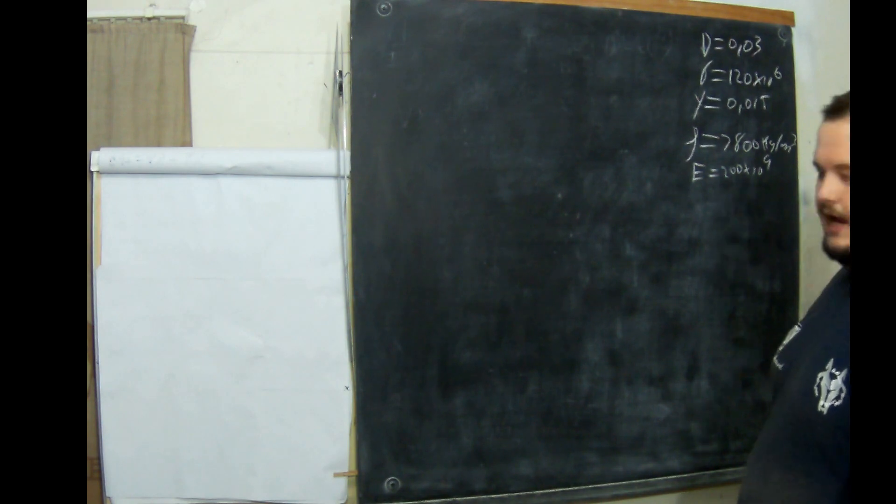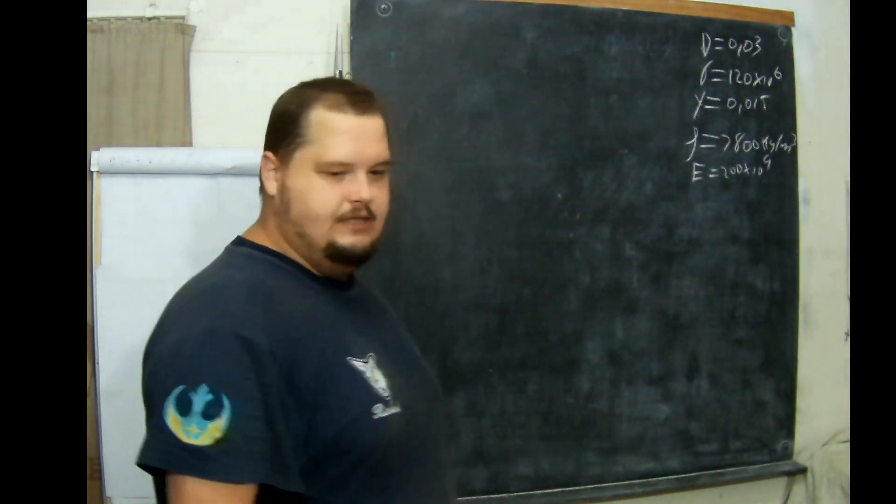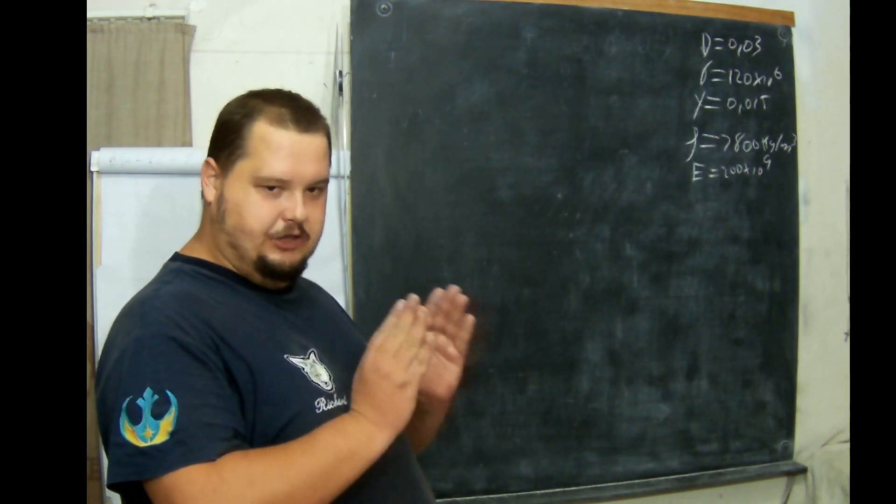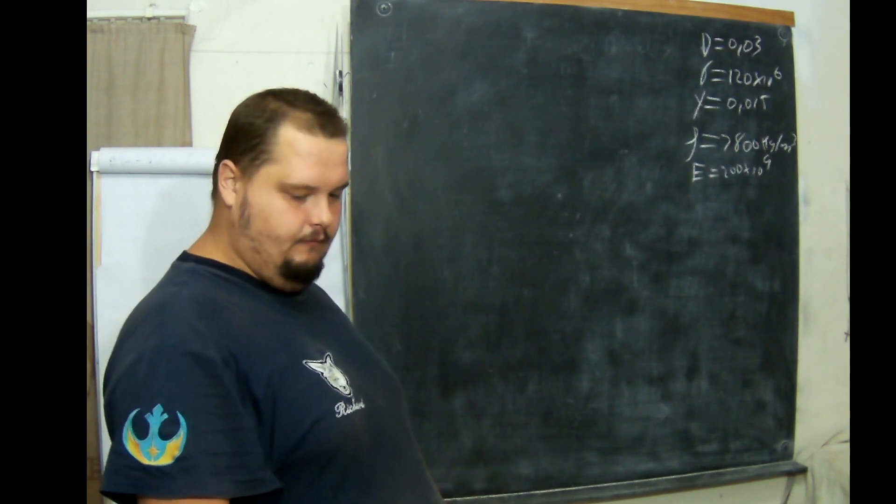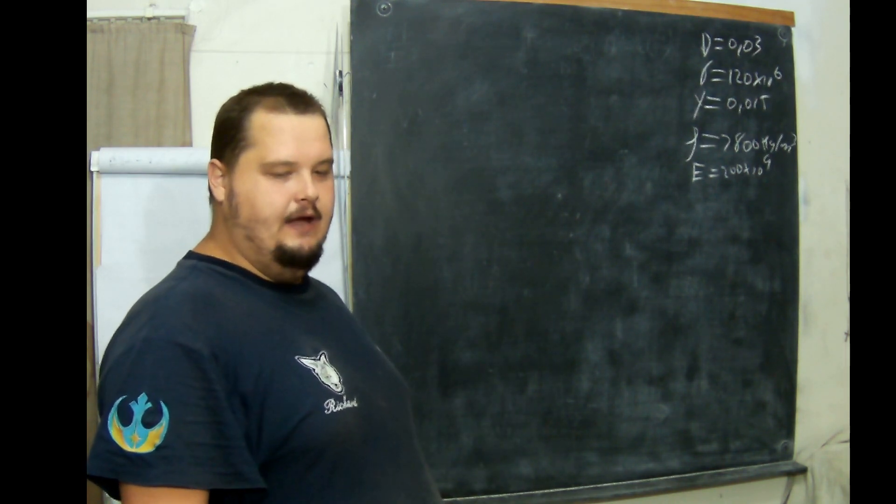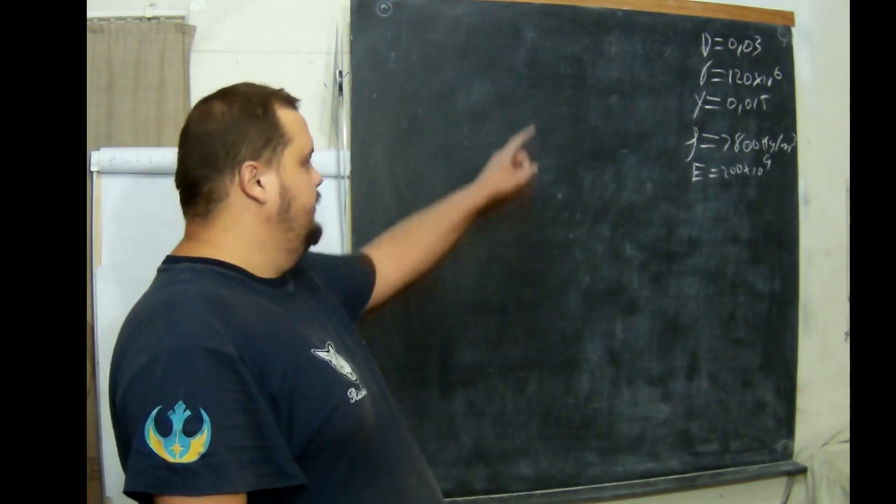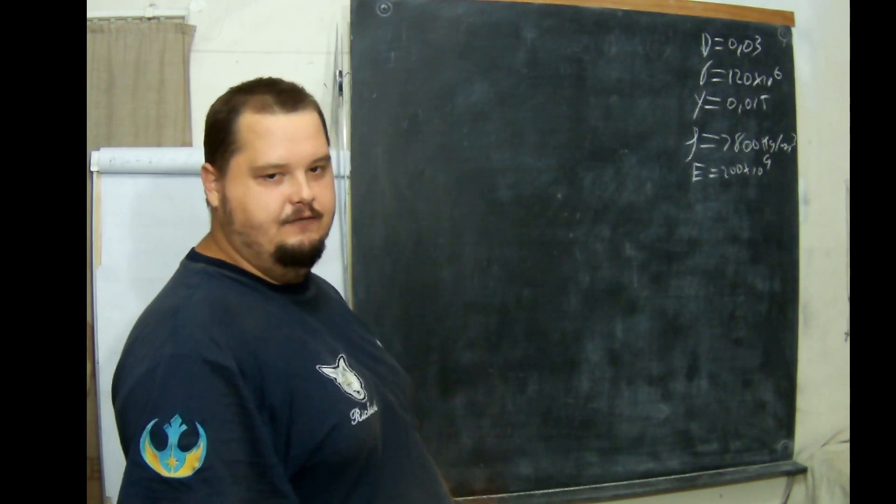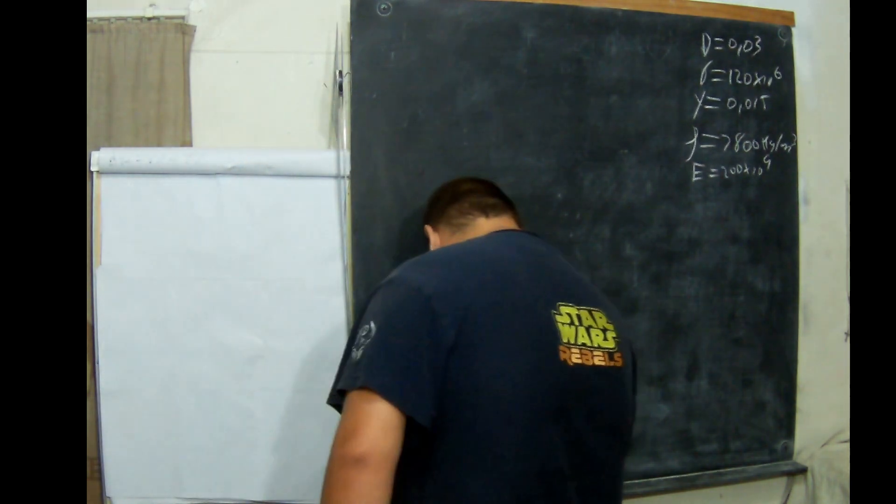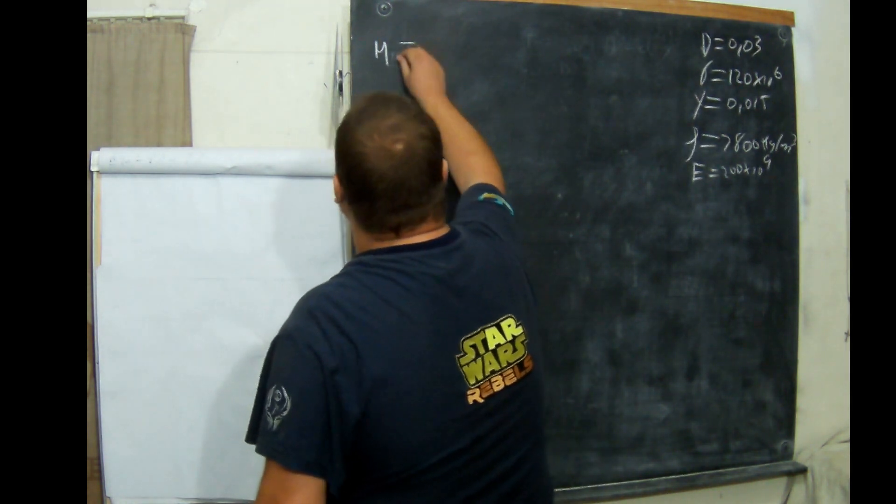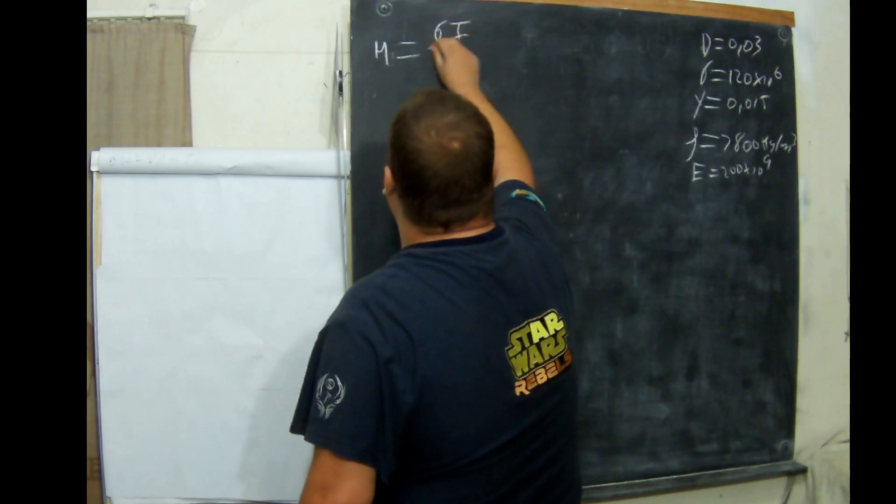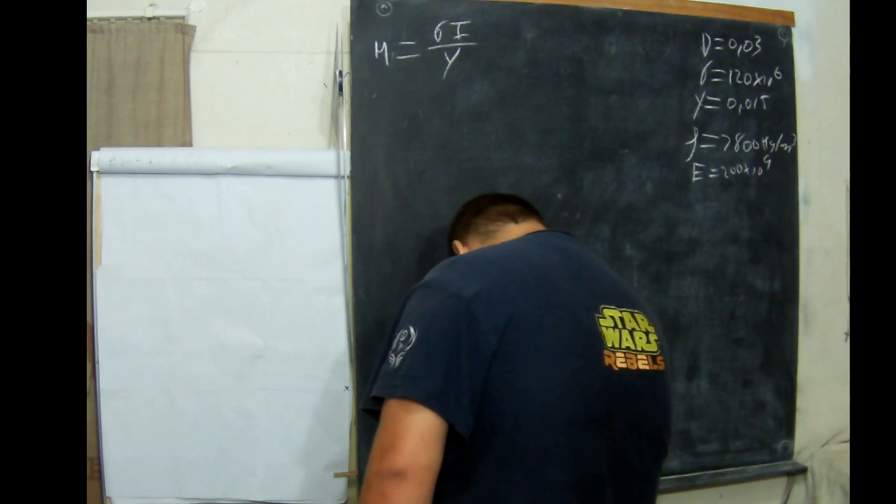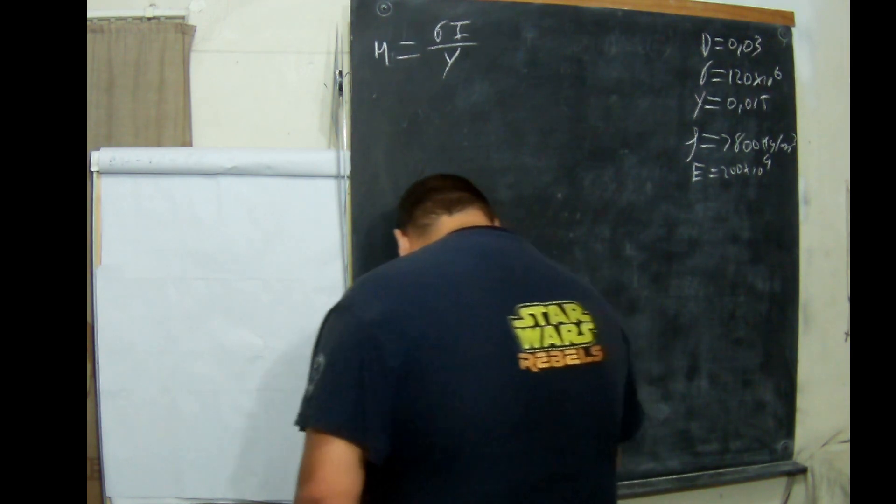We have to work out the shortest length that two supports can be on that shaft. We have to use just that information and get more information that we will need along the way with the formulas I'm going to give you. First formula is M equals σi over y.